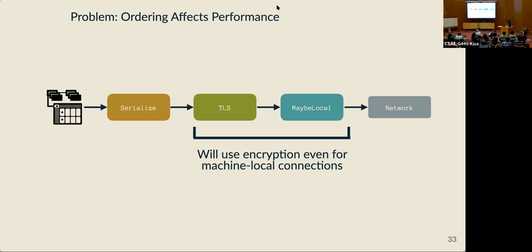Let's look at our microservice application's channel stack again. This stack specifies channels in traditional order: first application logic with serialization, then transport layer logic with TLS, then routing logic with the maybe-local channel. But even for local connections, the connections produced by this channel stack are going to encrypt bytes destined within the same machine — a waste of resources, since bytes that don't leave our machine don't really need to be encrypted.